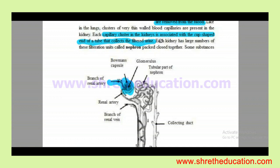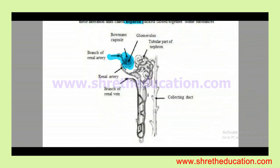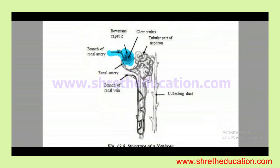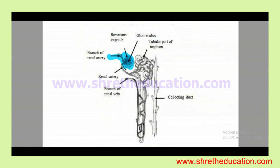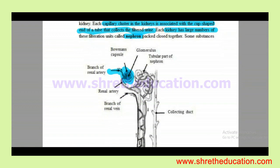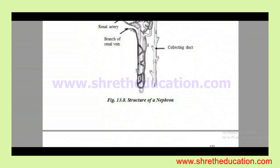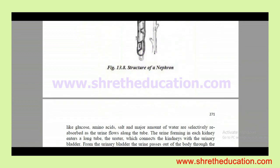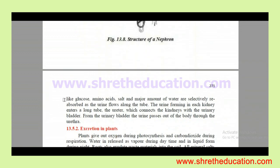Each kidney has a large number of filtration units called nephrons. The structure of the nephron is important from an examination point of view. Some substances like glucose, amino acids, salts, and a major amount of water are selectively reabsorbed as the urine flows along the tube.